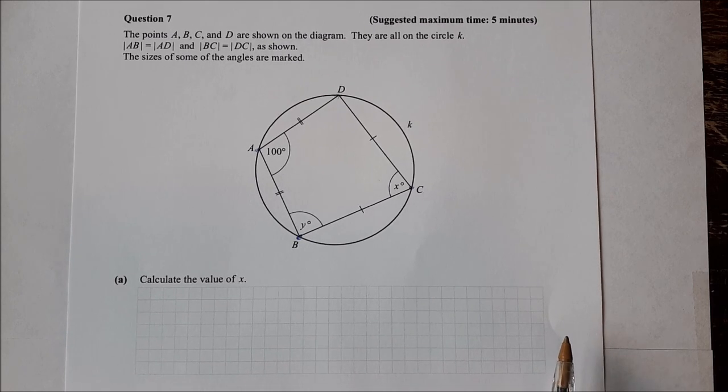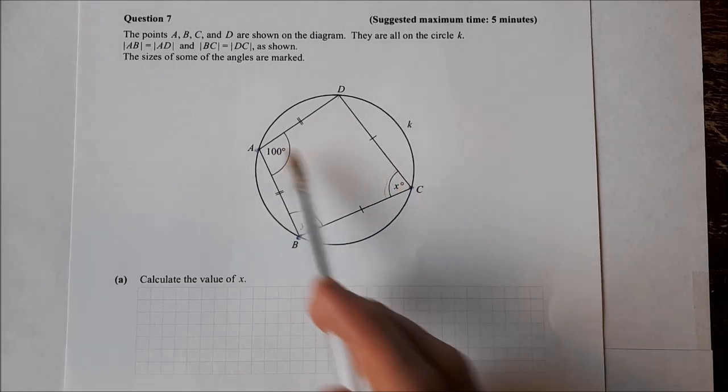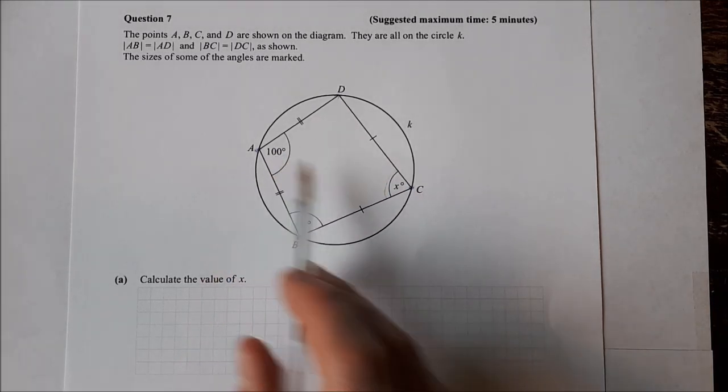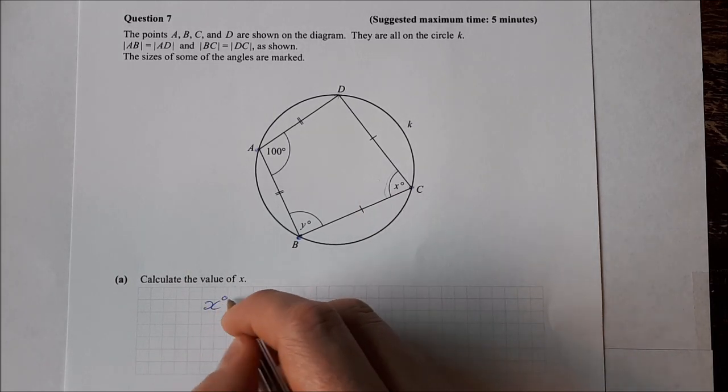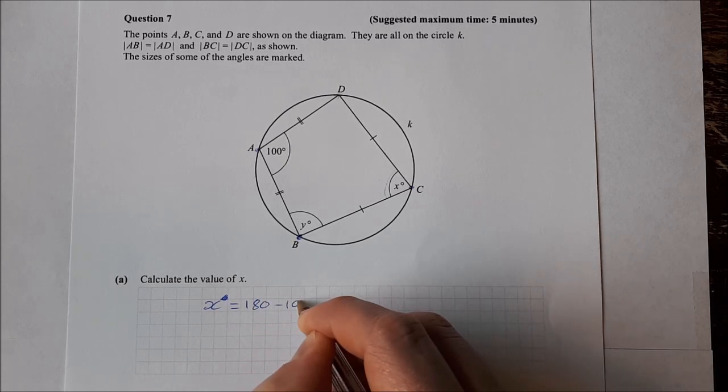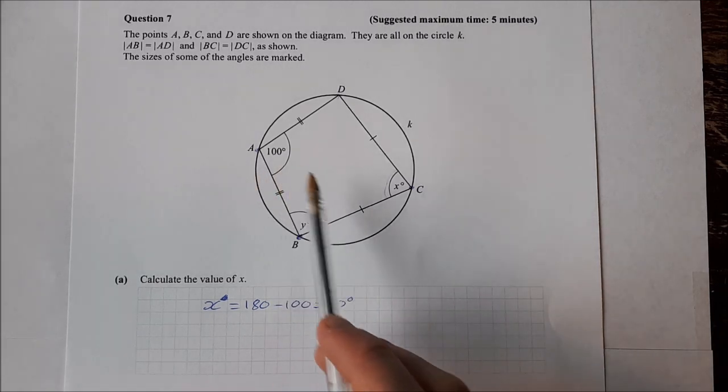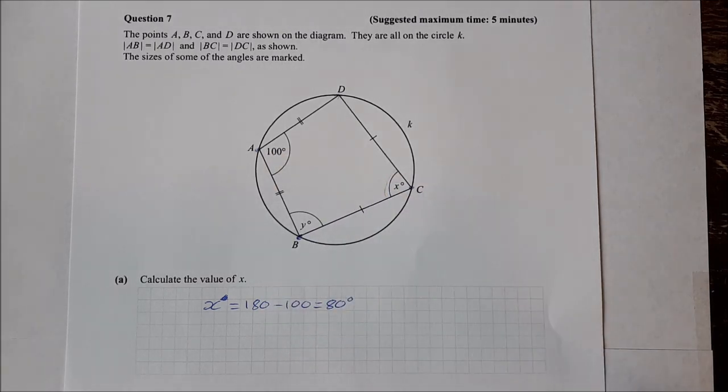Calculate the value of X. So that would be this one here. Well in a cyclic quadrilateral, one of the things that you need to know is that opposite angles always add up to 180. So that means 100 and this add up together to give you 180. So X is equal to 180 minus 100 which is equal to 80 degrees. So just always remember, opposite angles in a cyclic quadrilateral add up to 180 degrees.